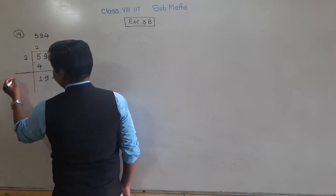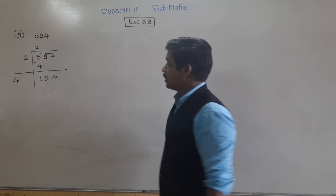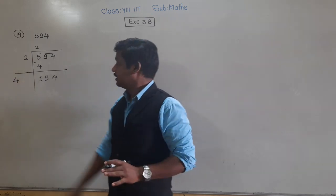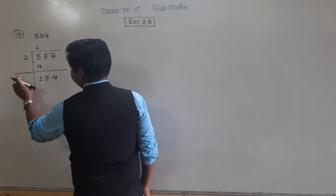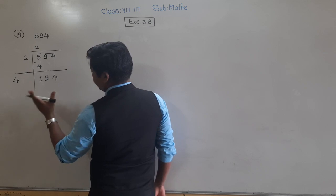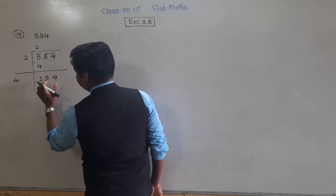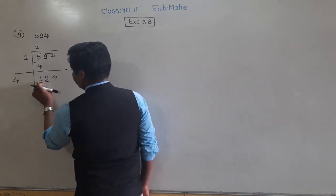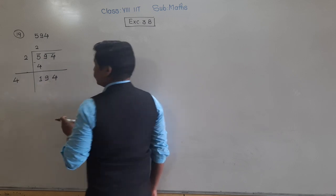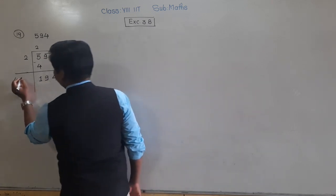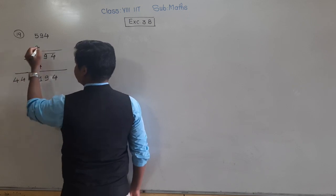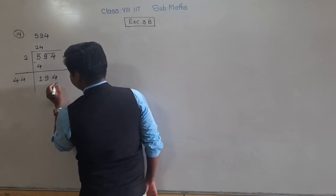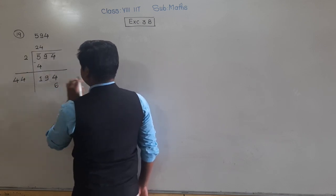We have 194, and here 2 twos are 4. Now we have to take a digit from 0 to 9. The first two digits are 19. When we divide 19 by 4, we get 4 fours are 16. So 4 will come in the quotient and divisor. 4 fours are 16, carry 1; 4 fours are 16 plus 1 is 17.